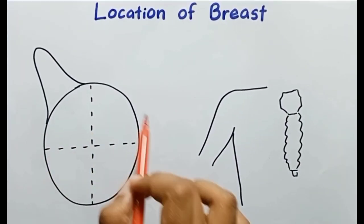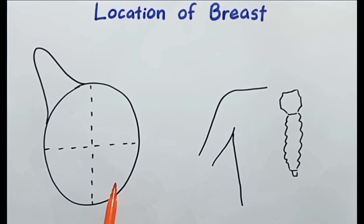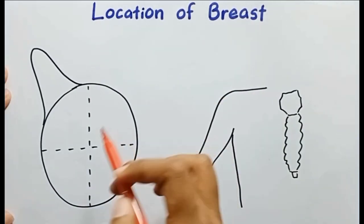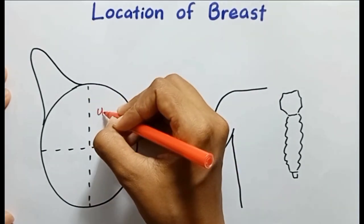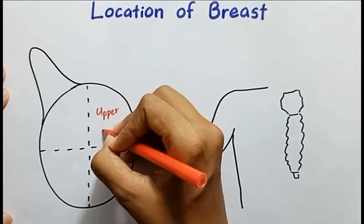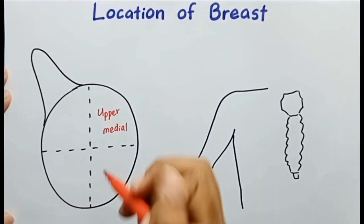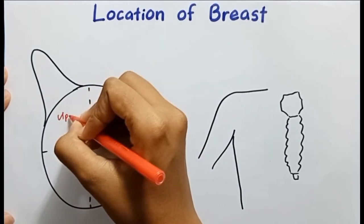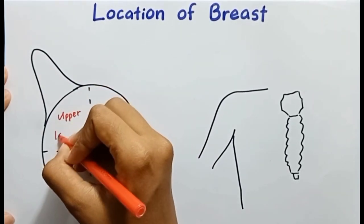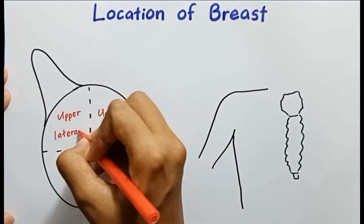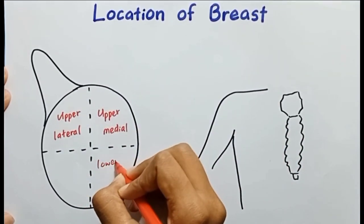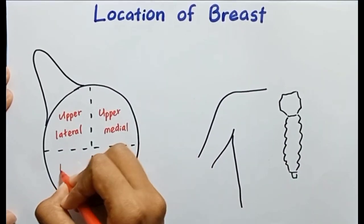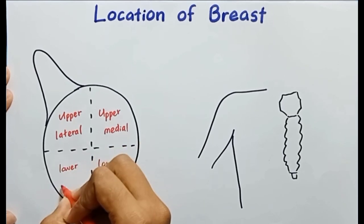Here you can see the upper part and this is the lower part. So this is upper medial, as it's closer to the medial axis of the body. This is the upper medial part and this is the upper lateral part. It is the side far from the medial axis of the body. And this is the lower medial part and this is the lower lateral part.